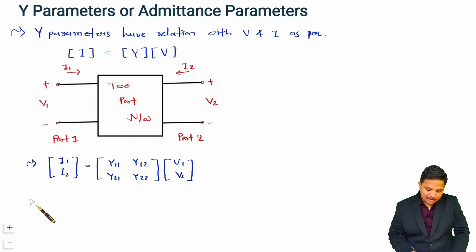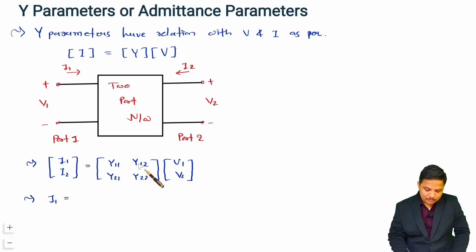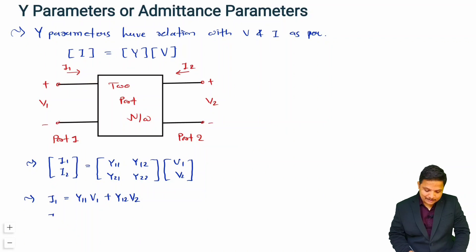Based on that we have two essential equations of the two port network with Y parameter. The first equation is: I1 = Y11·V1 + Y12·V2. The second equation is: I2 = Y21·V1 + Y22·V2.